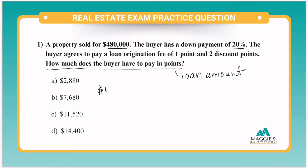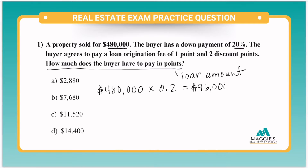I'm going to take $480,000 and multiply it by 20%, so that's going to equal 0.2. That comes out to $96,000. That is just our down payment.